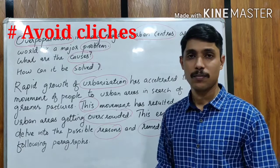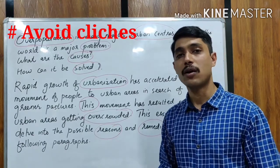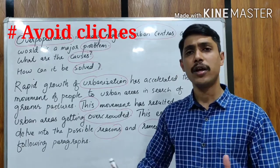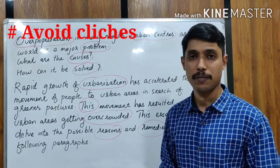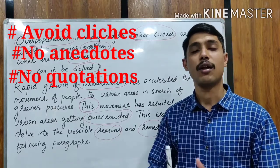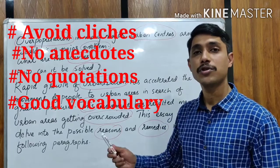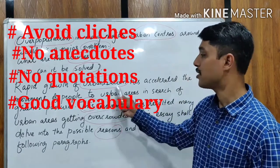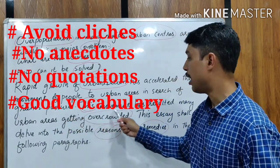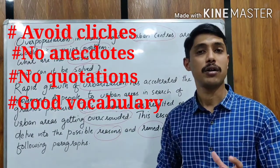Now some important things about this answer. First, there are no clichés. Many students start with 'usually,' 'nowadays,' or 'these days' — these are very commonly used phrases, so better avoid them. There are no anecdotes and no quotations — just write a normal statement. Next, vocabulary is very important. Here we used words like urbanization, greener pastures (meaning better opportunities), movement, and overcrowded — these earn you better marks.